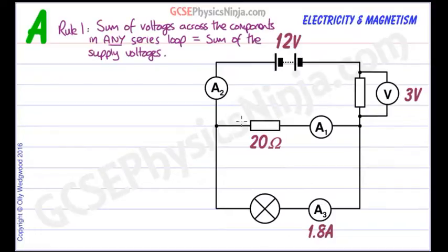So immediately we can start to analyze this circuit. We have a loop here. This is our first series loop. So using this first rule, we can see that the potential difference dropped across this resistor must be 12 minus 3, which is 9 volts. Brilliant.